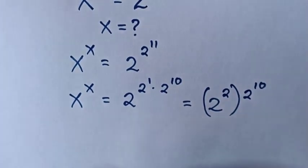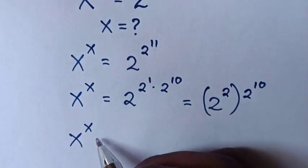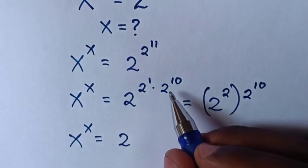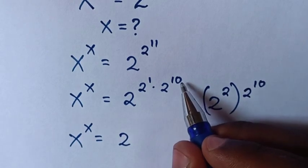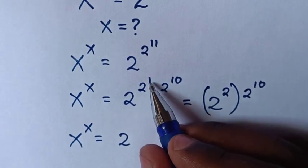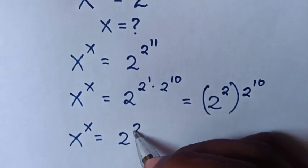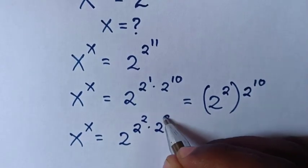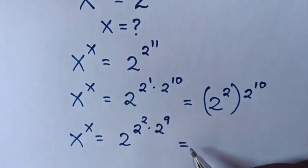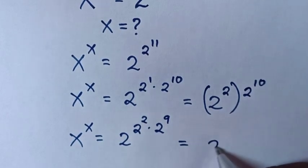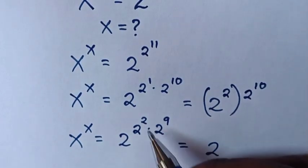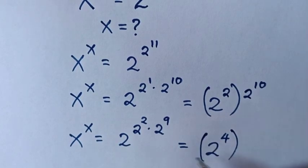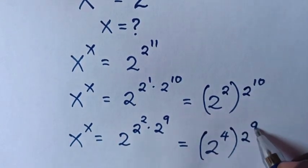Then x^x = 2^10 is further decomposed — the exponent increases by 1 power. So it becomes 2^(2 times 2^9), which equals 2^4 bracket 2^9, since 2^2 is the same as power of 4.